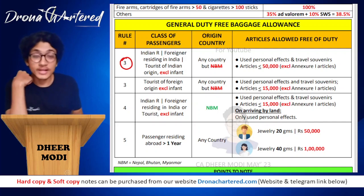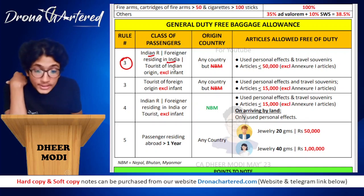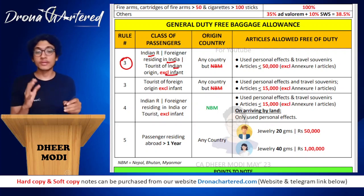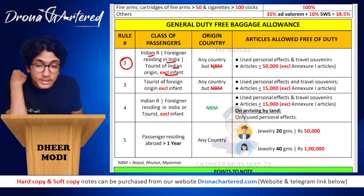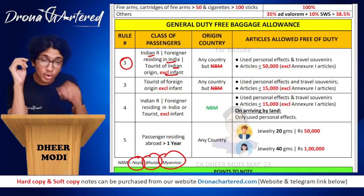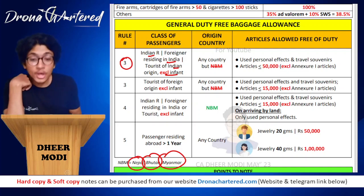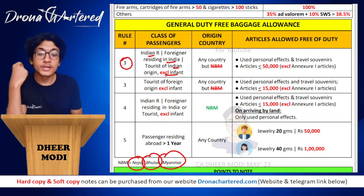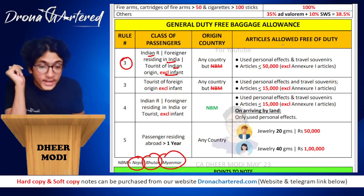Rule 3 applies to: any Indian resident, any foreigner residing in India, or any tourist of Indian origin — excluding infants — whose country of origin is any country other than Nepal, Bhutan, or Myanmar (NBM). If they are from any country except these three, Rule 3 becomes applicable.